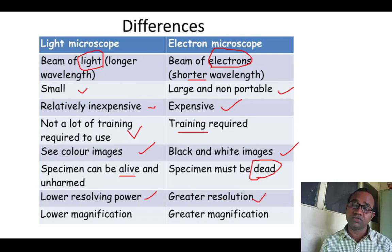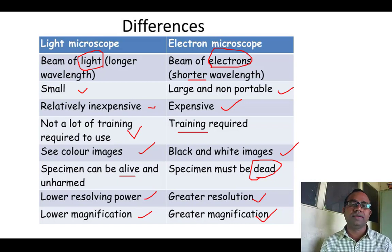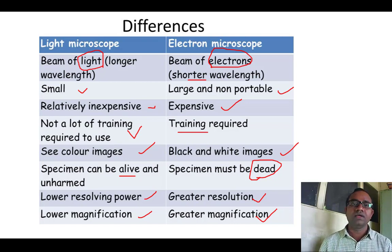The light microscope has lower resolving power and lower magnification, while the electron microscope provides high resolving power and high magnification. These are the basic differences between the light microscope and the electron microscope, and because of these differences the electron microscope is much more sophisticated and useful.